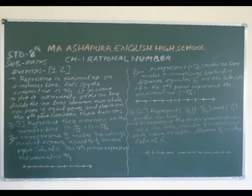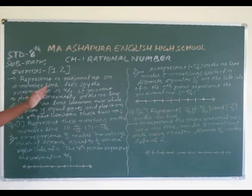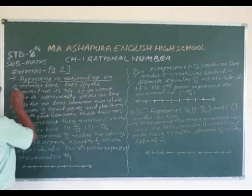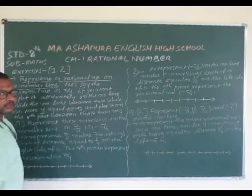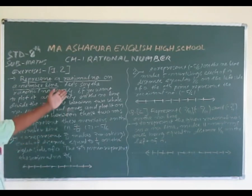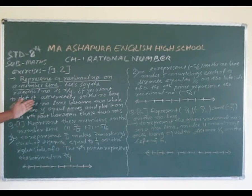From exercise 1.2, we discuss the representation of a rational number on a number line. We are going to say that the rational number is x by y — we know that the rational number is in p upon q form. If you want to plot it accurately on the number line, we are going to show you.